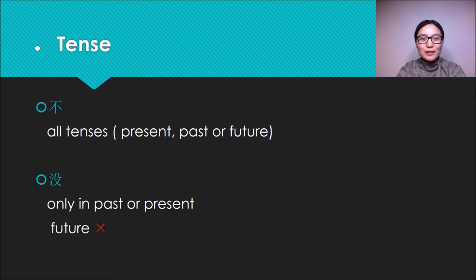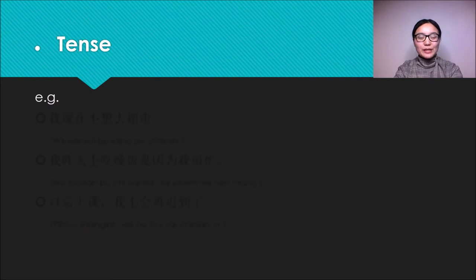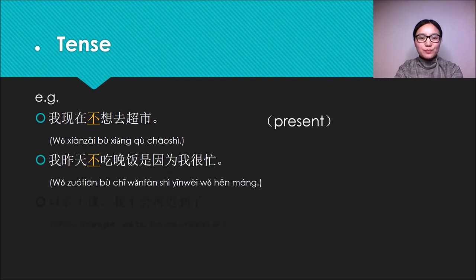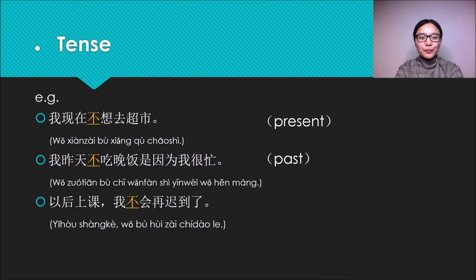Let's look at some sentences with Bu. First one: 我现在不想去超市 (I don't want to go to the supermarket now), so it's about present. Next: 我昨天不吃晚饭是因为我很忙 (I didn't have dinner yesterday because I was pretty busy), so it's about past. Next one: 以后上课我不会再迟到了 (I won't be late again during class time in the future), so it's about future tense.